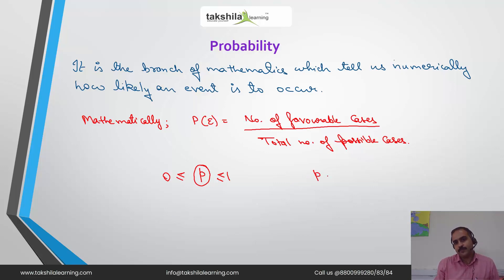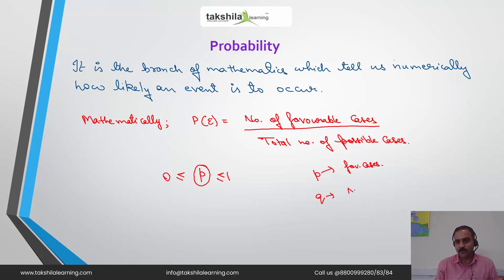If P is the probability of favorable cases — that means the cases which you require — and Q is the probability of non-favorable cases — those which you don't require — then the sum of both will always be equal to 1.